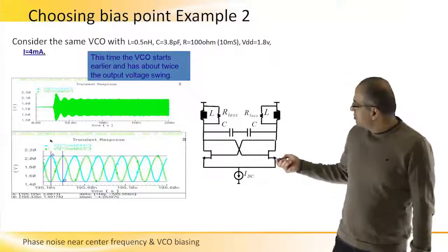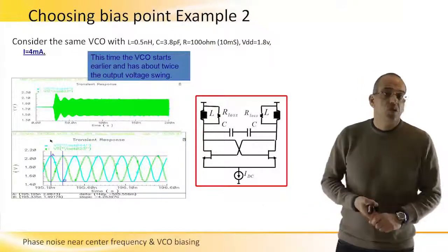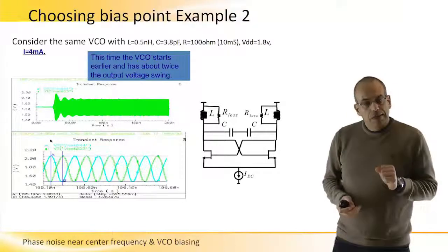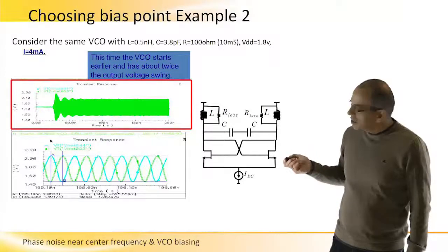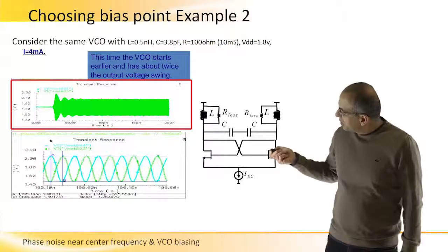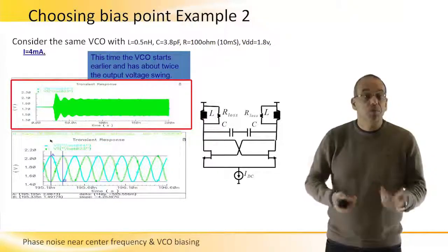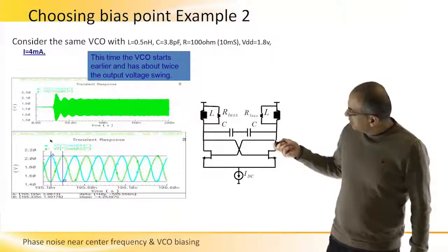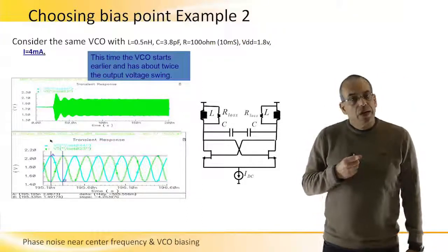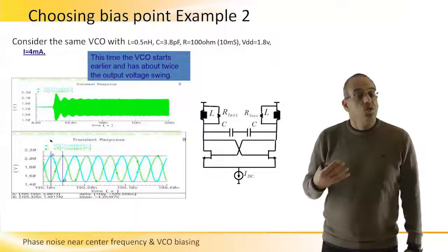In Example 2, the exact same VCO schematic is used, but the bias current is doubled. With double the current, the VCO oscillates without issue. Looking at the transient performance, the VCO takes less time to start oscillating because more energy is returned to the tank, so oscillations build up faster. In steady state, doubling the current doubles the output voltage, as predicted.